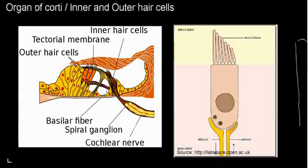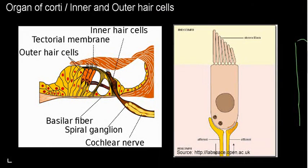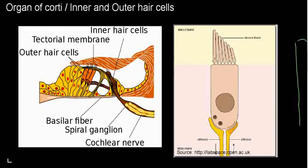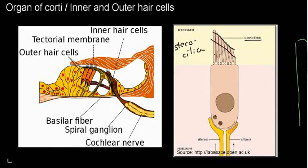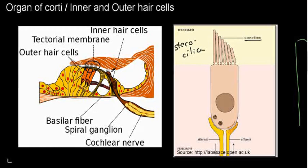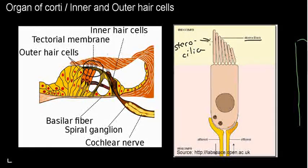When this membrane vibrates, we can see there are some cells that come in contact with it — these are the hair cells. They're called hair cells because they have these funny-looking hairs, which are actually stereocilia. These stereocilia have a contact surface with the tectorial membrane. So when the membrane vibrates, there's going to be some associated motion with these hairs.